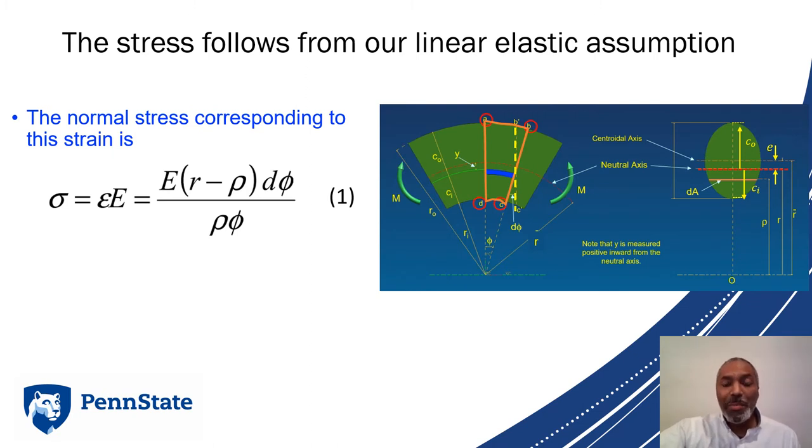Our stress follows from our linear elastic assumption. The normal stress for anything that is linearly elastic, sigma equals E epsilon, but we already know our strain, so we just put a modulus in front of it, and we quickly have our stresses.